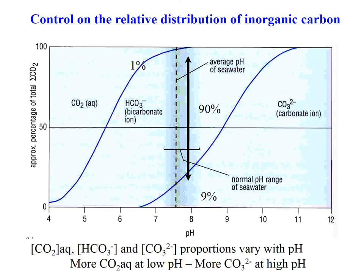The pH determines what proportions of the different species we have. At a pH of 9, maybe 50% would be carbonate and 50% bicarbonate, with almost no dissolved CO2. Whereas at pH 7, we'd have maybe 1–2% carbonate, much more bicarbonate, and a little bit of CO2. Conversely, if we start pumping loads of CO2 into the system, that forces the reaction the other way towards more carbonate and bicarbonate, and drives the pH to a lower value because we're adding hydrogen ions.